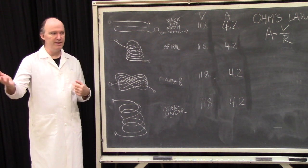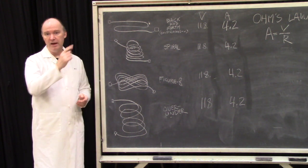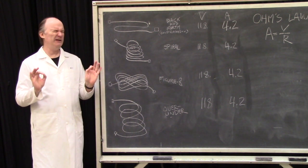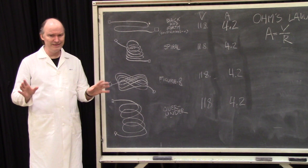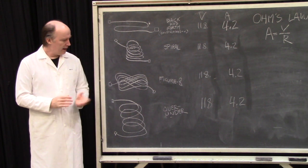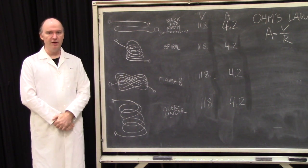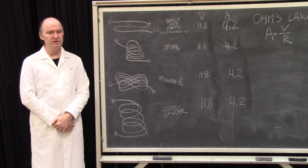So then I straightened it out and I coiled it into a figure eight, which I was always told was the perfect way to coil your cable if you were trying to avoid this sort of inductance related nonsense. Plugged my lamp in, took my measurements, got 118 volts and 4.2 amps.